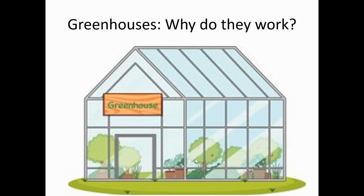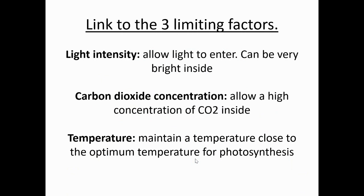Let's link this back to agriculture. What is a greenhouse? Most of you will know — they are places that will increase plant growth. The way they work is linked to these limiting factors. This is the link to how we improve the yield of our crops. People need to eat plants, or at least animals that have eaten plants. So our energy comes through agriculture and through using greenhouses.